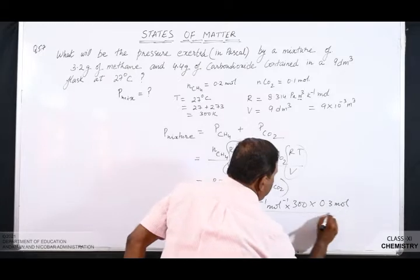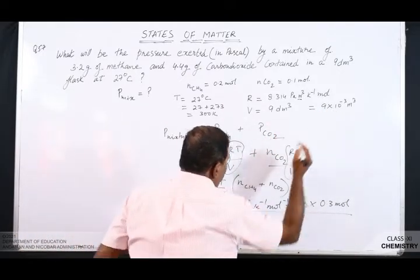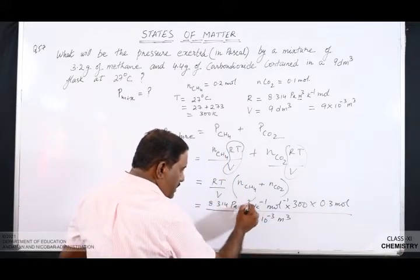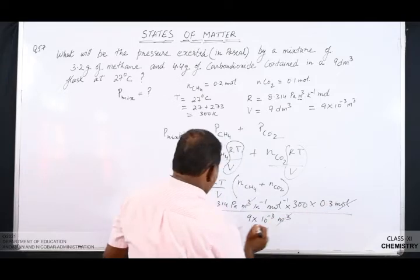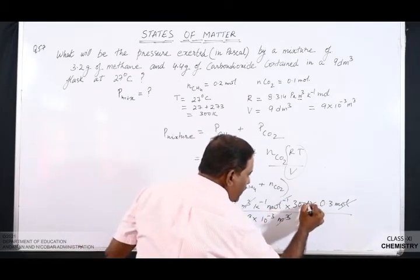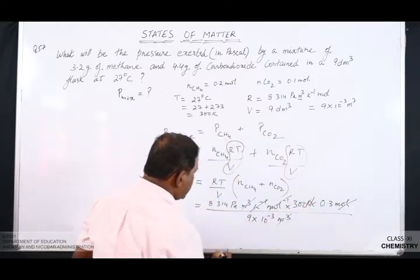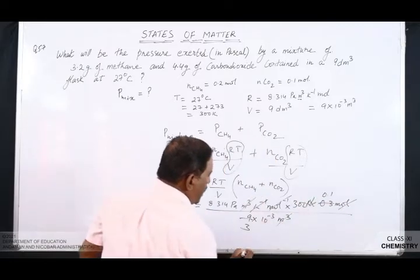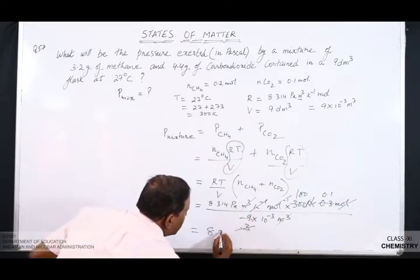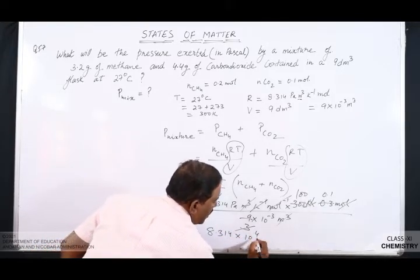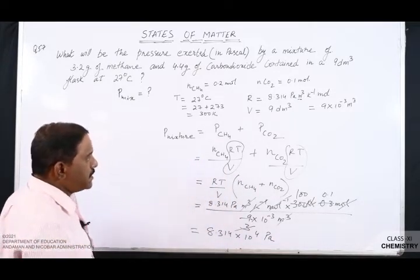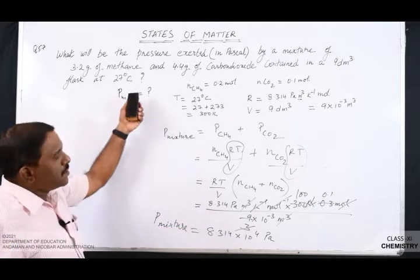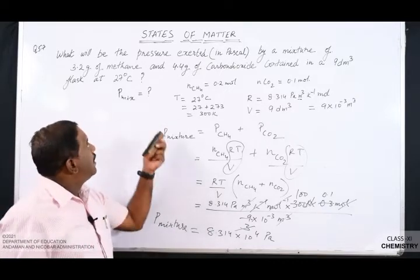With volume = 9 × 10⁻³ m³, we cancel units: moles cancel, Kelvin cancels. When we calculate this, we get 3.14 × 10⁴ Pascal. This is the required answer — the total pressure of the mixture. In this way you can attempt other questions in the exercise. Now let us see another question, 5.18.